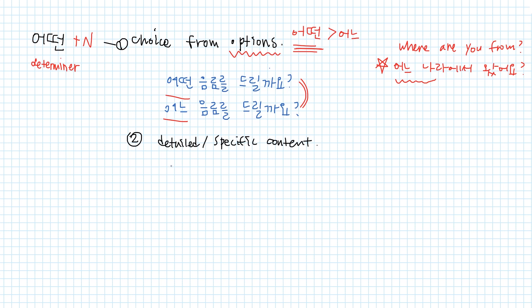And 어떤 is also used to ask detailed or specific content. For example, 어떤 일로 오셨어요? What brings you here? You could also say 무슨 일로 오셨어요? This sentence with 무슨 literally means what brings you here. And with 어떤, it means what's the specific reason that you're here. So when you use 어떤, you're expecting a detailed answer.